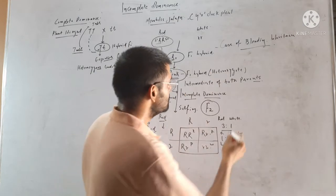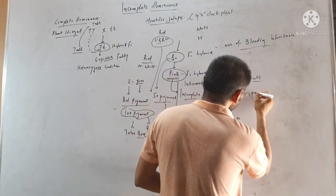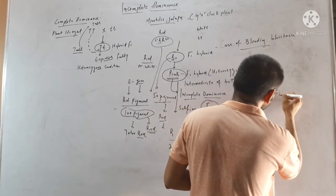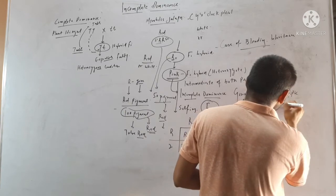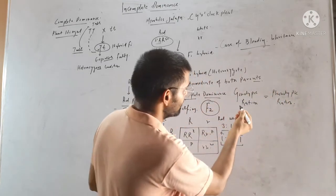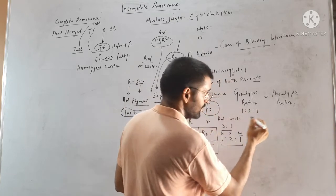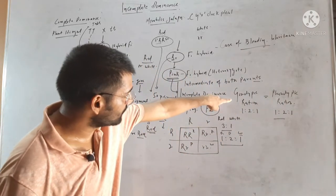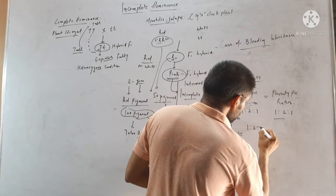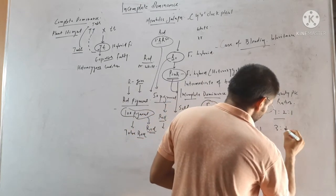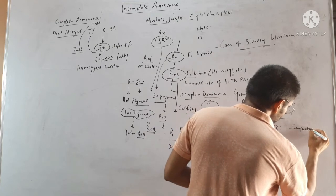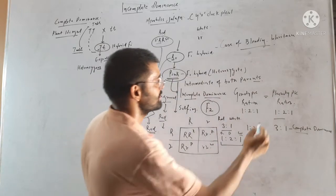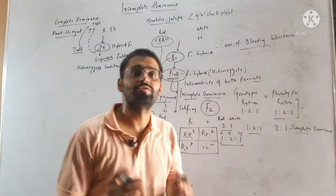In the case of incomplete dominance, the genotypic ratio is always equal to the phenotypic ratio. Here, the genotypic ratio is 1:2:1 and the phenotypic ratio is also 1:2:1. But in the case of complete dominance, the genotypic ratio is 1:2:1 while the phenotypic ratio is 3:1.